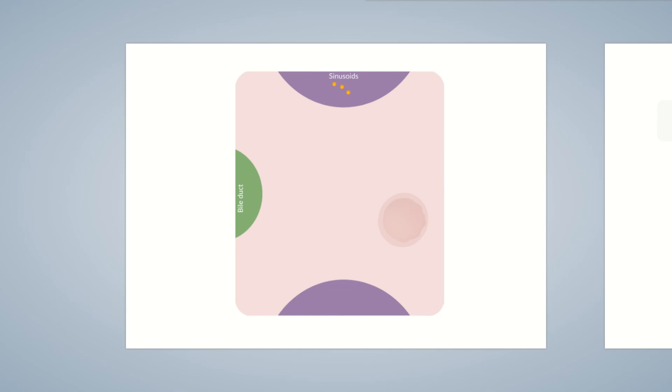Copper is then absorbed from the portal venous blood by the hepatocyte. The cell membrane of the hepatocyte contains special copper transport proteins known as CTR1. The abbreviation, CTR, stands for copper transporter. The copper ions in the blood enter the hepatocytes through CTR1.